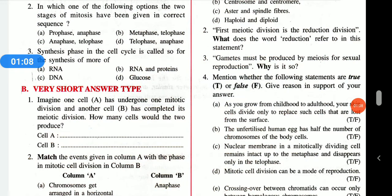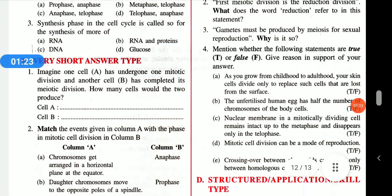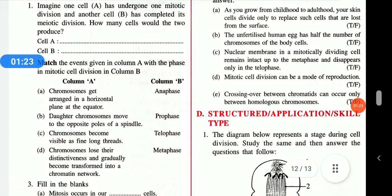Imagine cell A has undergone one mitotic division and cell B has completed two mitotic divisions — how many cells would each produce? Cell A will produce two daughter cells and cell B will produce four daughter cells.